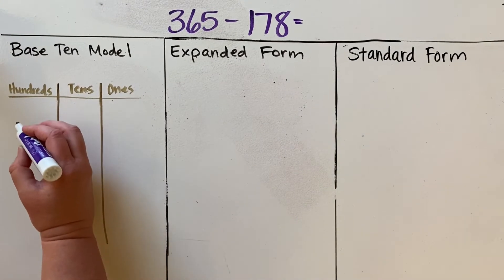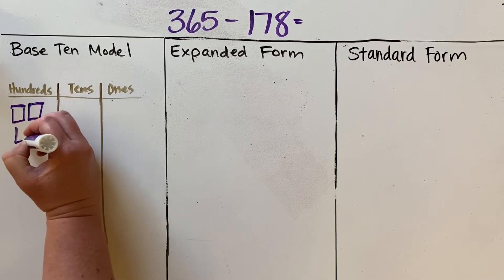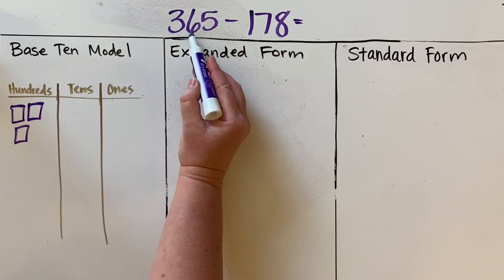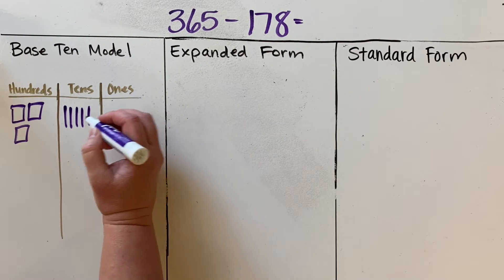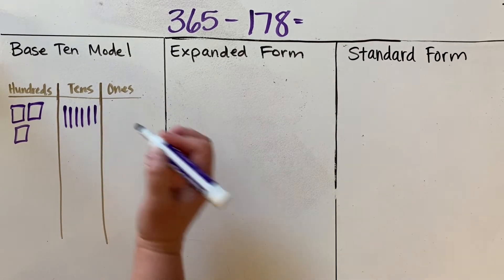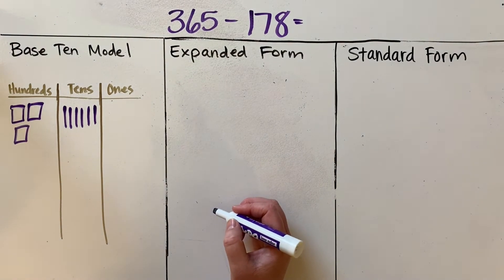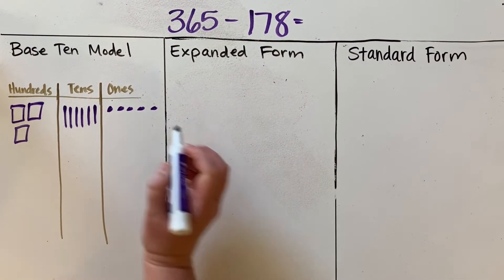For our base-10 model, we're going to draw that 365, the number that we are subtracting from. So there are three hundreds. For the tens, there are six tens—one, two, three, four, five, six. It's always good to count it out loud. And five ones: one, two, three, four, five.